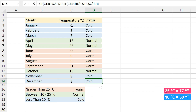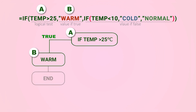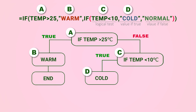Let me show you step by step what happened in the formula. In the first part, if the temperature is above 25°C the condition is true, so Excel shows 'Warm' and ends the function. If it is less than 25°C the result is false, so Excel starts the second IF function. If the temperature is less than 10°C the condition is true and Excel shows 'Cold'. But if the temperature is above 10°C Excel shows 'Normal' and ends the function.